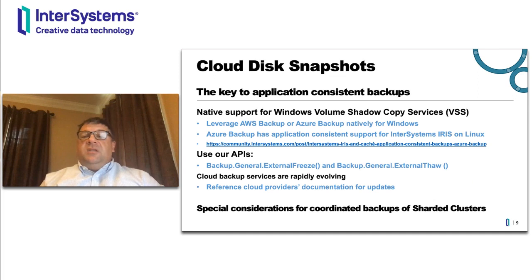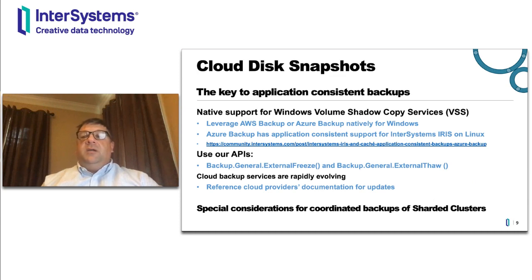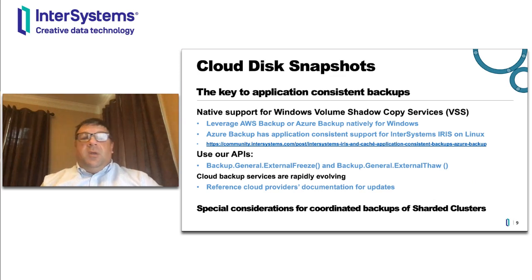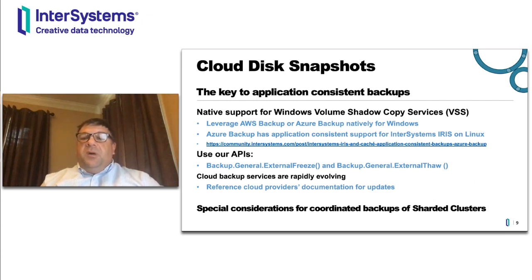There are some specifics to be aware of. If using Windows compute instances or virtual machines, IRIS provides direct support for Windows Volume Shadow Copy Services, or VSS. With VSS support, you can easily leverage AWS Backup or Azure Backup natively and achieve application-consistent backups without any further actions required. However, for Linux, achieving that same application consistency requires additional steps — specifically the freeze and thaw APIs. We have also worked with the Microsoft Azure Storage Team to help simplify this process, and there's an article on our developer community you can search for by looking up 'Azure backup.'